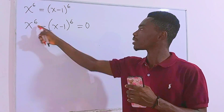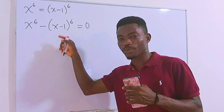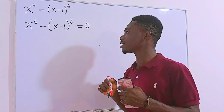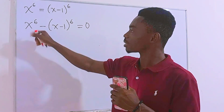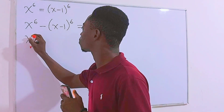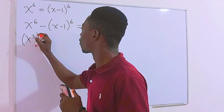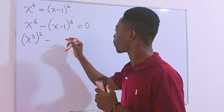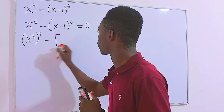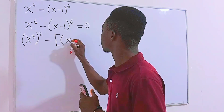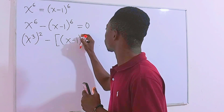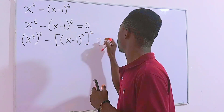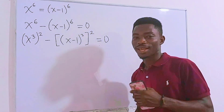Now, the powers are so big — if you try to expand them directly, you will suffer a little bit, but we don't want to suffer. I'll do this instead: I'll see x to the 6th power as x to the 3rd power all to the 2nd power, minus x minus 1 all to the 3rd power, all to the 2nd power, and this is equal to 0.